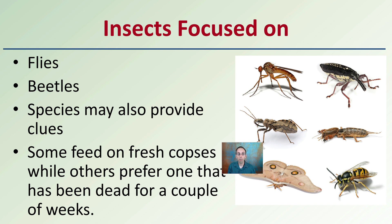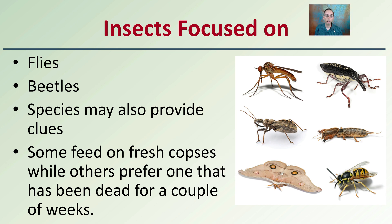Insects typically focused on include flies and beetles. Species may also provide clues, as some feed on fresh corpses while others prefer ones that have been dead for a couple of weeks. Proper identification can really help a forensic scientist pinpoint the time of death, which can help further investigation and allocation of resources.